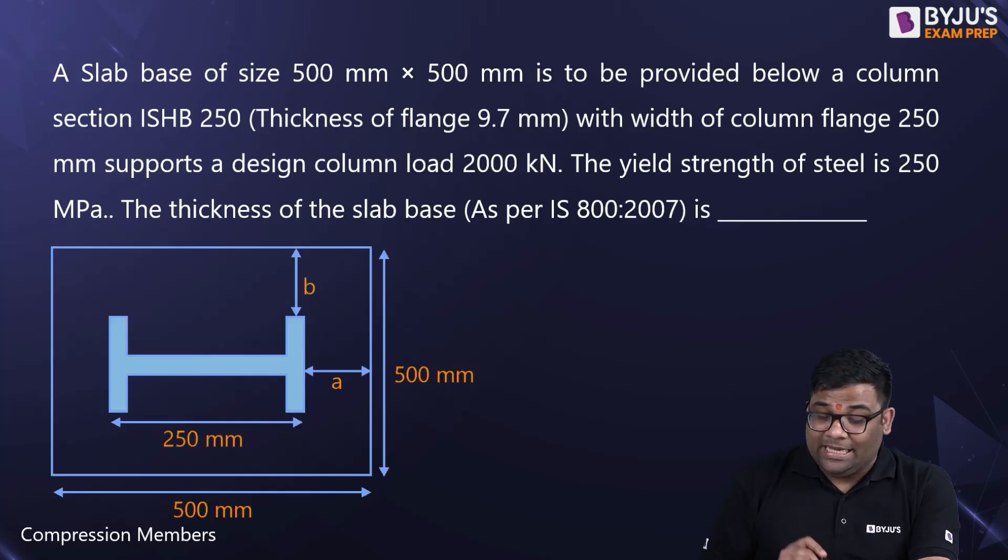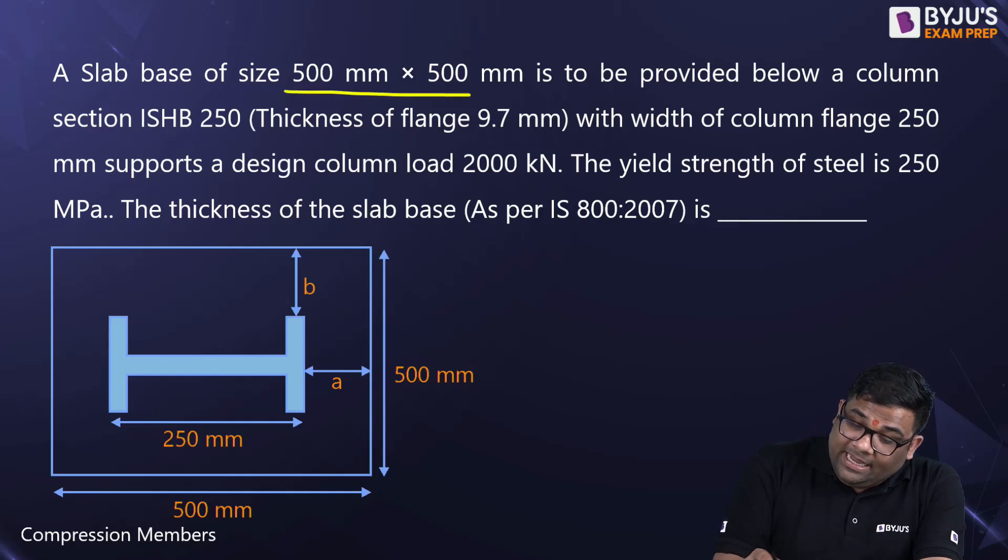Yes, here you can see that a base slab is given, this is the area so 500 into 500. Now I can find out the projections. The projections will be same. Why? Because you see this is given ISHB 250, that means its length is 250 and also it's given that the width is 250.